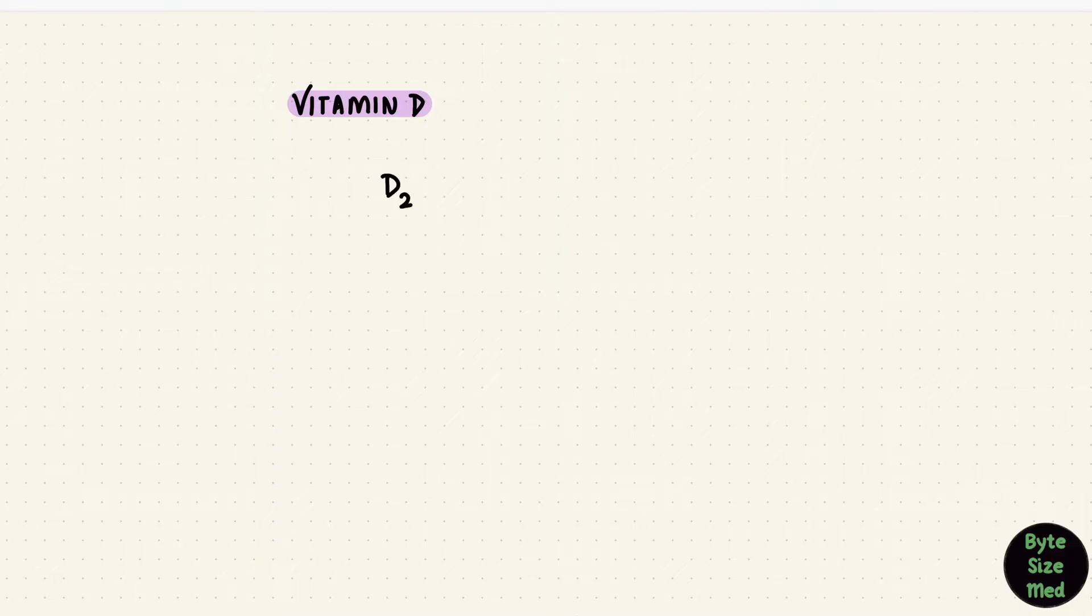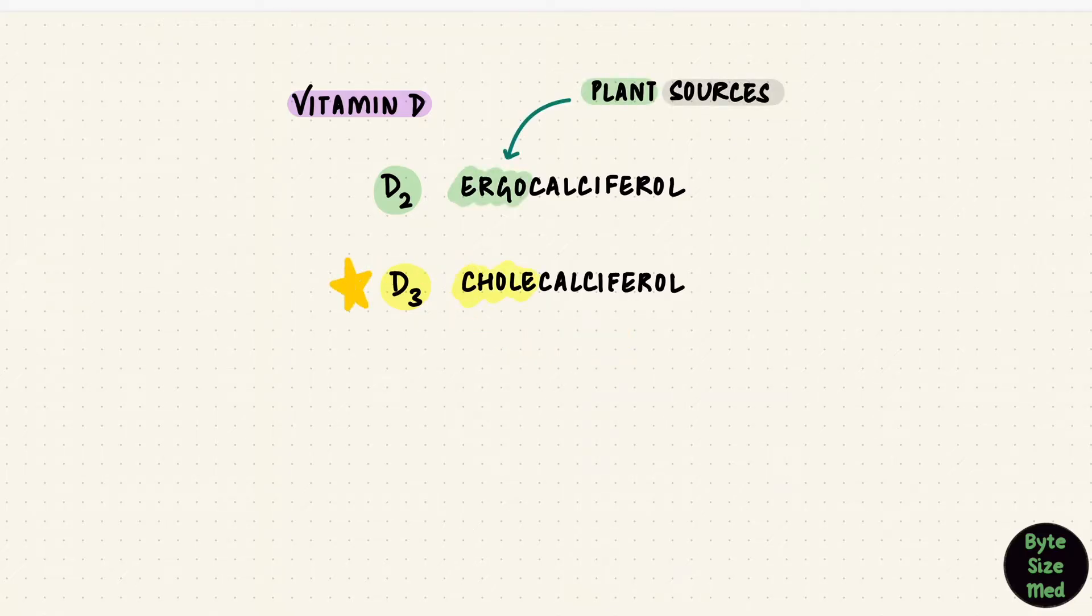There are two important forms of vitamin D. Vitamin D2 and vitamin D3. D2 is ergocalciferol. D3 is cholecalciferol. C is the third letter of the alphabet, that's vitamin D3. For this video we need vitamin D3, cholecalciferol. It's synthesized in the skin. It can also come from diet but mainly with the sun and skin.